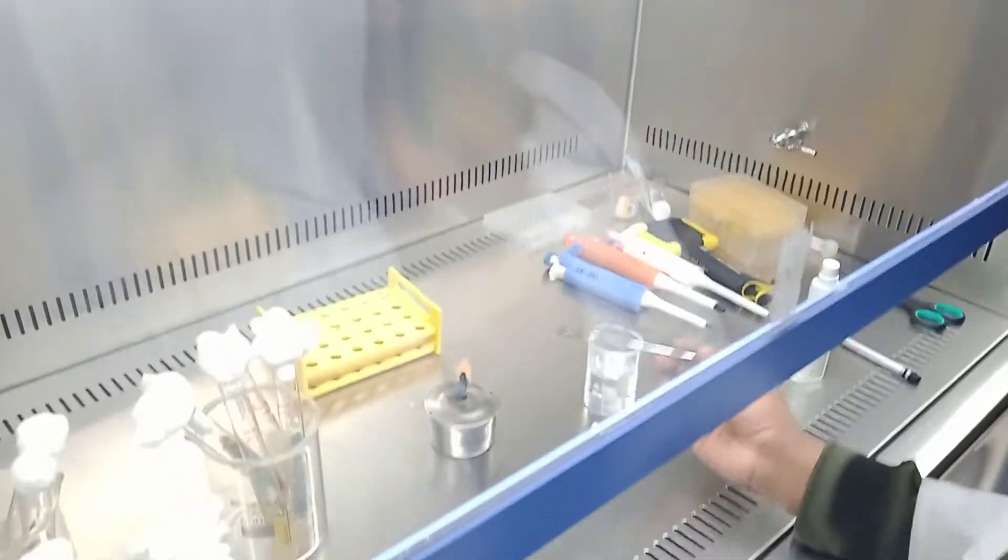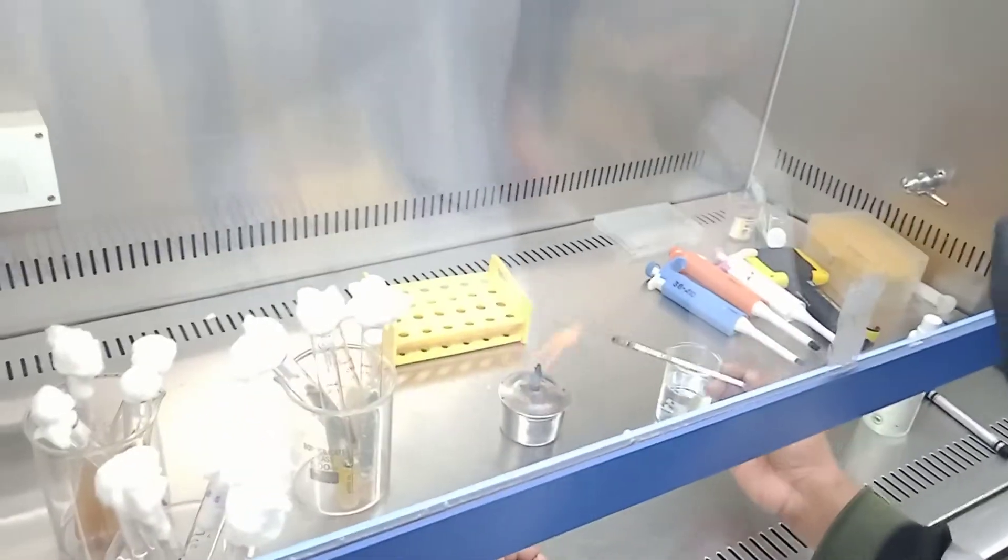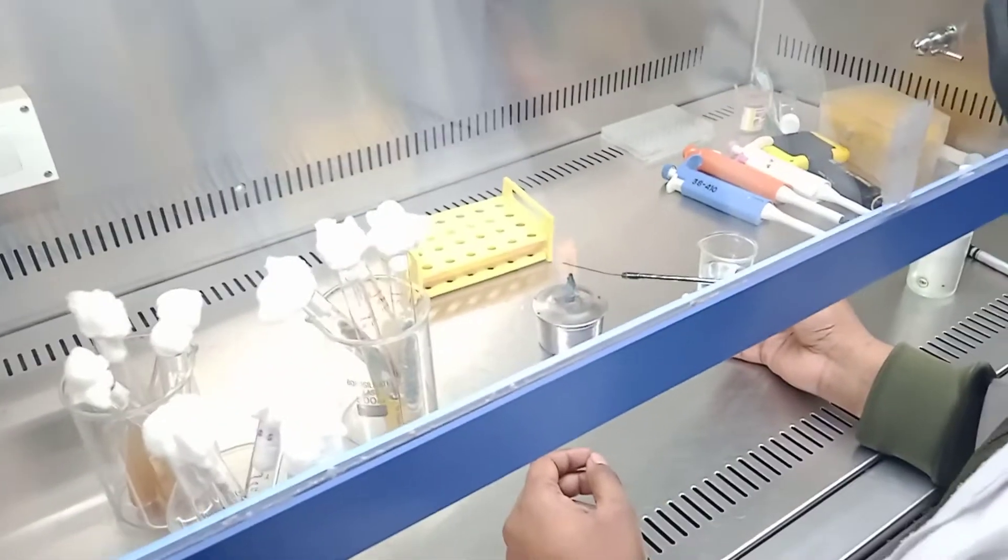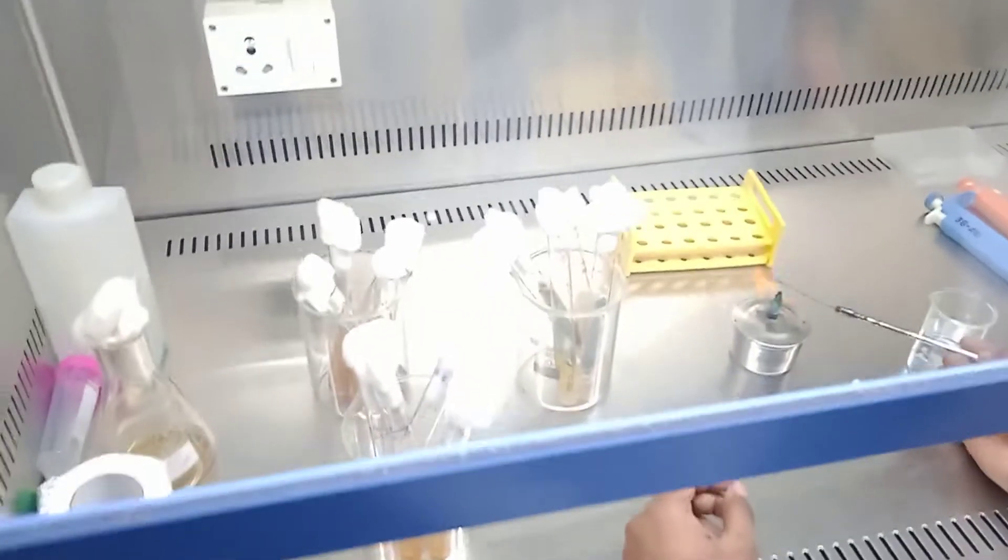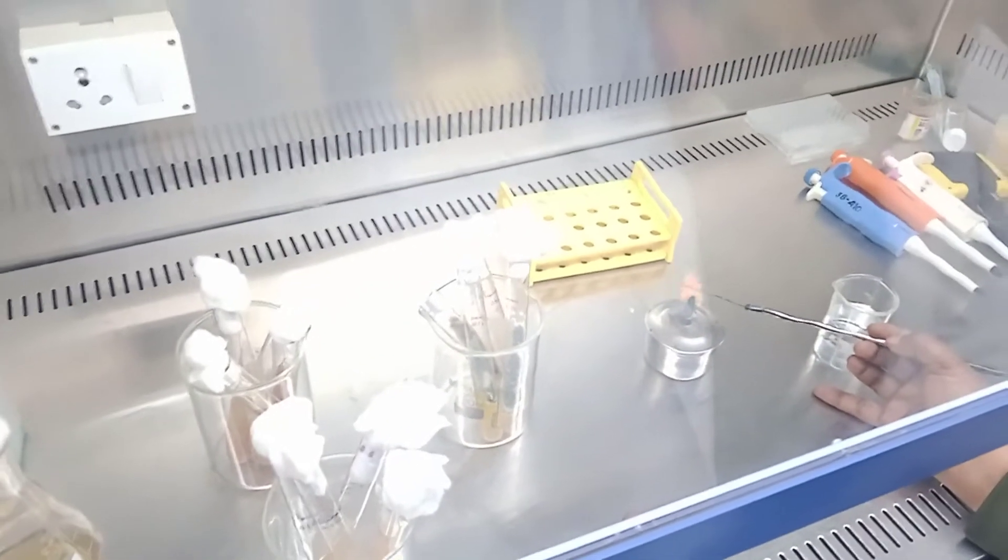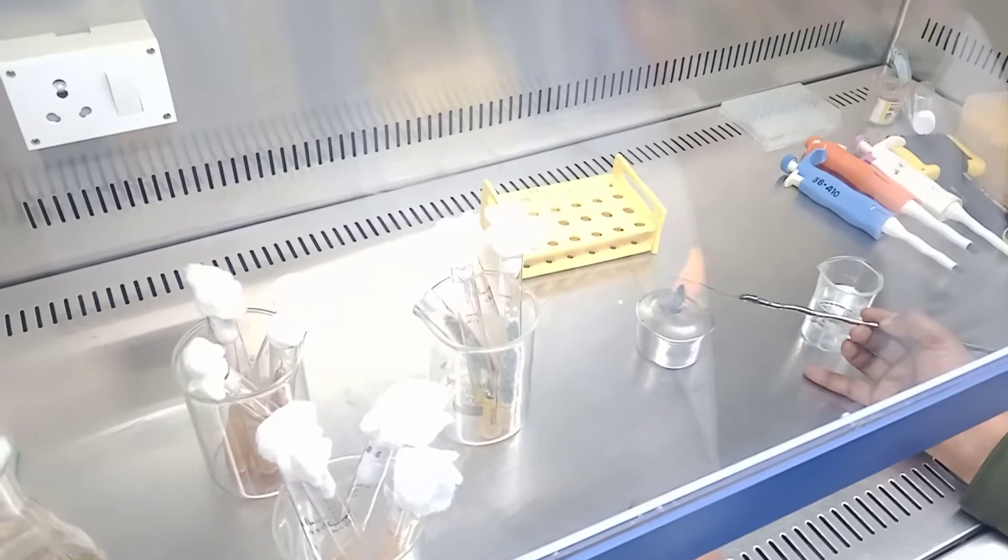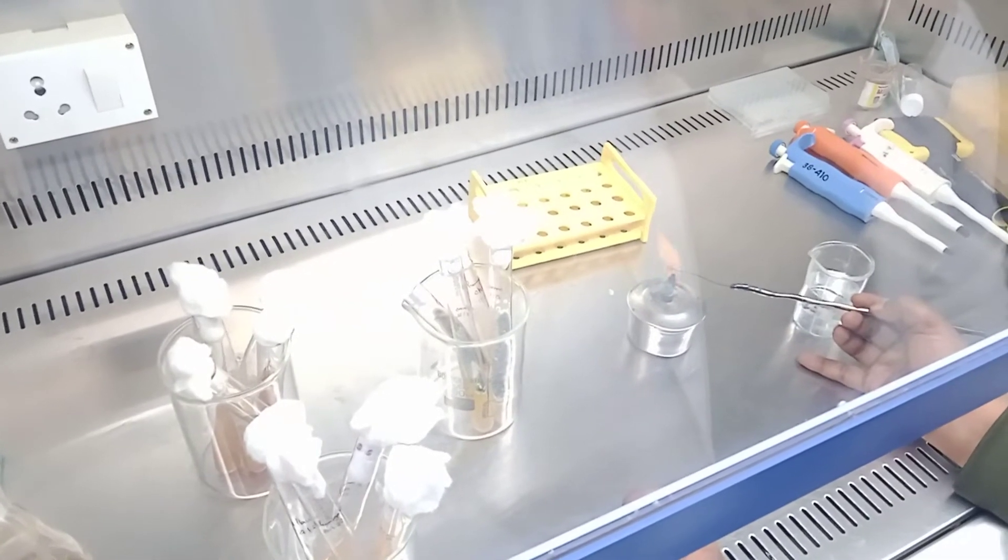So Saikat will be demonstrating, I will speak for you guys. So what you can see here is Saikat is basically using an inoculating loop. There is a spirit lamp. So he will make it red hot.